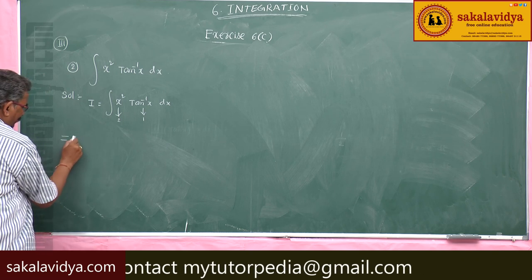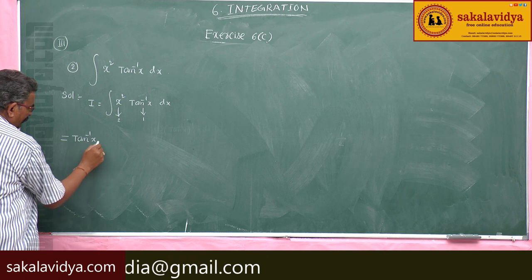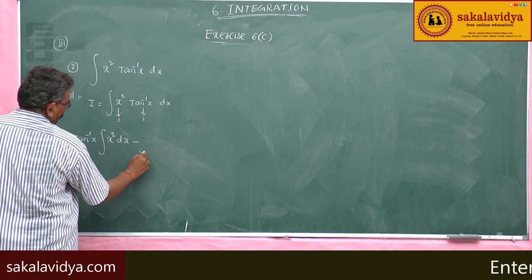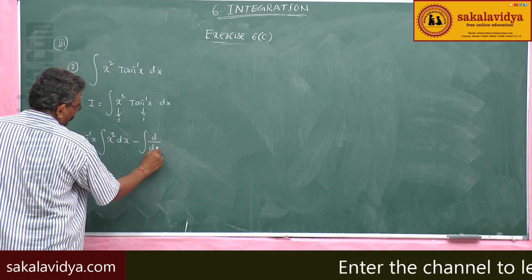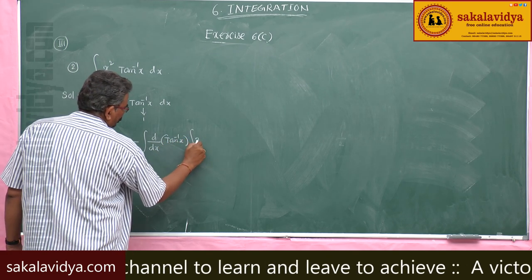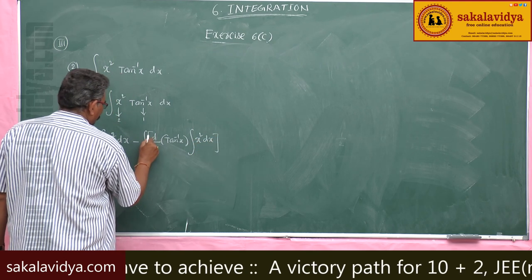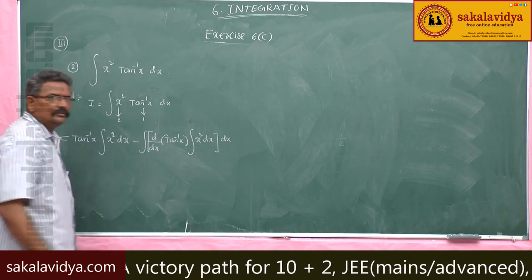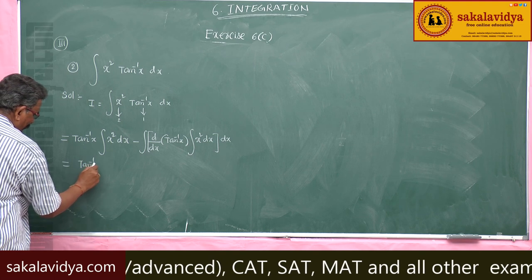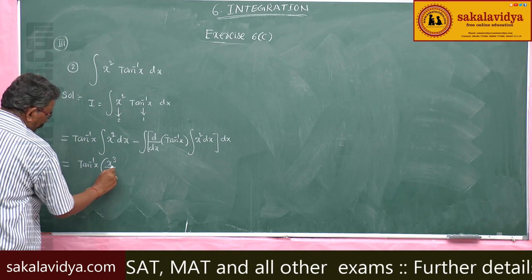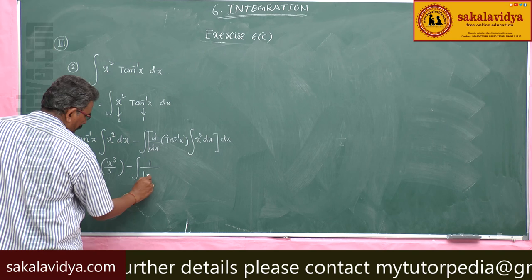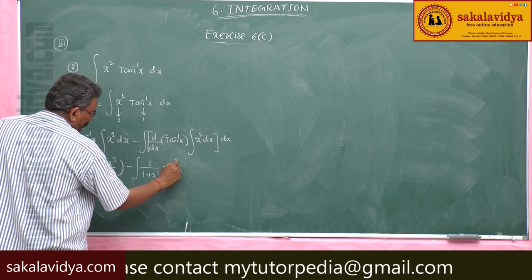Now, applying integration by parts: first function tan inverse x times integral of x squared dx, minus integral of d/dx of tan inverse x times integral of x squared dx, all dx. So tan inverse x times x cubed by 3, minus the derivative of tan inverse x which is 1 by 1 plus x squared, times x cubed by 3 dx.